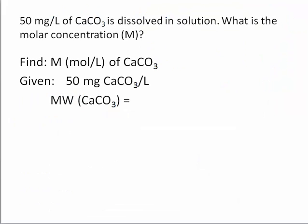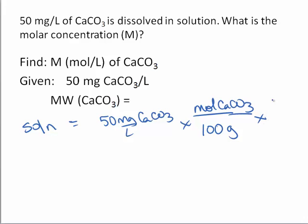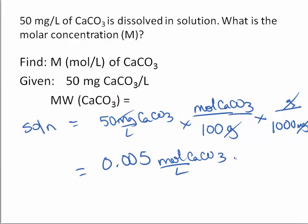So going back to our example, we're trying to convert 50 milligrams per liter of calcium carbonate to molar concentration. We're simply going to multiply the mass concentration of calcium carbonate, 50 milligrams per liter, times the molecular weight, 100 grams per mole, and make sure that our units cancel out by saying that there are 1,000 milligrams per gram. And when we do that, we'll see that we're left with 0.005 moles calcium carbonate per liter. This could be expressed as 0.005 molar, or 5 millimolar.